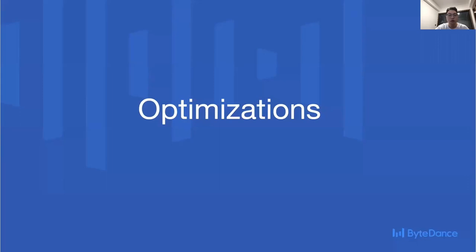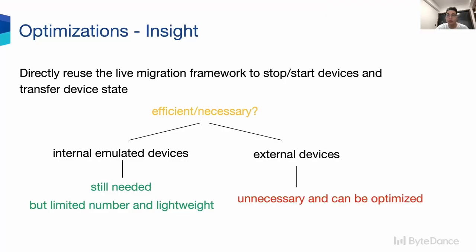Now we have known the hotspots, and the most direct question is: is it necessary or efficient to stop and start devices and transfer device data by directly reusing the Live Migration framework? For internal emulated devices, yes, we still need the process, but the number of them is usually limited and the time costs are relatively small. But for external devices, such as vhost user devices, whose data paths have little VM intervention, it is unnecessary and can be optimized.